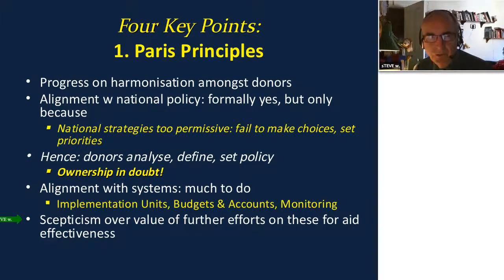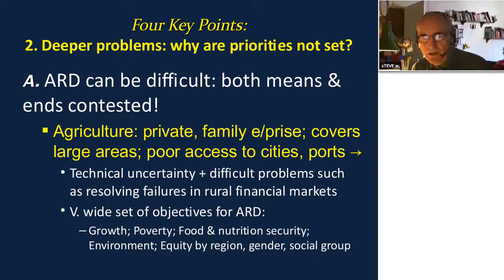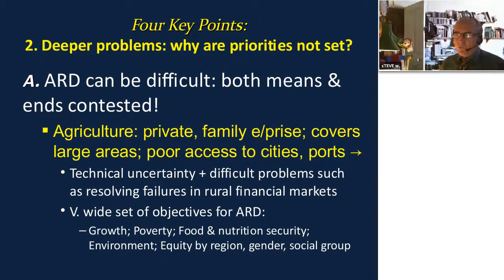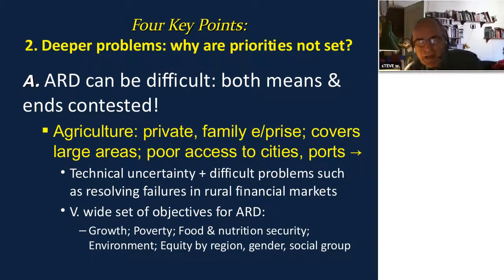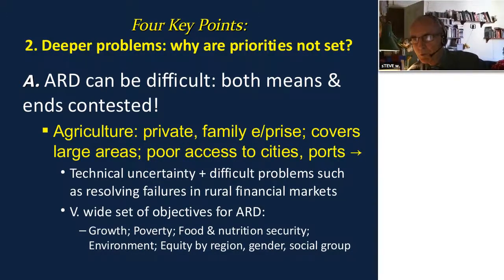Once you say that national ownership is a problem, you transfer yourself from the issue of coherence to asking: why would a developing country government not want to set out a firm, clear set of priorities for agriculture and rural development? We think the answer lies in two features of our sector.